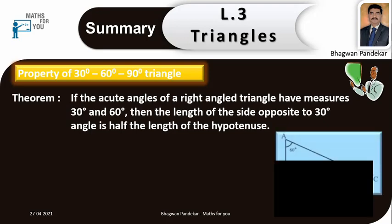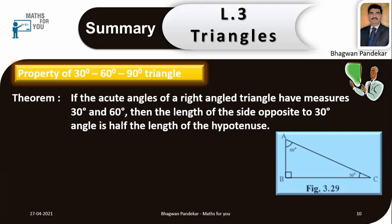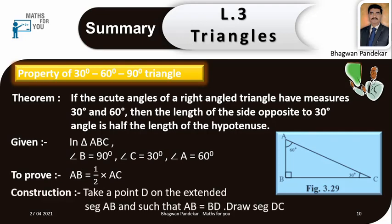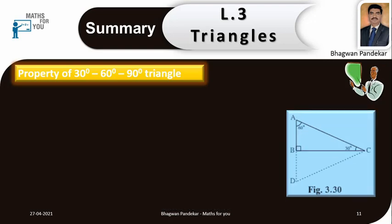In this theorem, the acute angles of a right triangle have measures 30 degrees and 60 degrees. Then the length of the side opposite to the 30 degree angle is half the length of the hypotenuse. Observing this figure, we can write given information. In triangle ABC, angle B is equal to 90 degrees, angle C is equal to 30 degrees, and angle A is equal to 60 degrees. To prove: AB is equal to 1/2 × AC. Construction: take a point D on the extended segment AB such that AB is equal to BD, then draw segment DC.